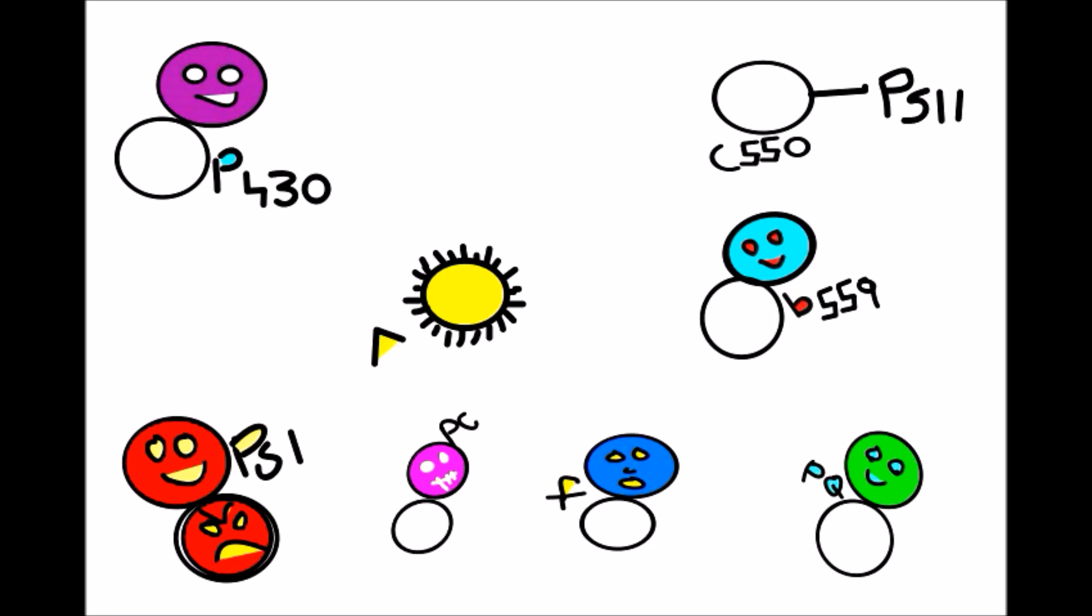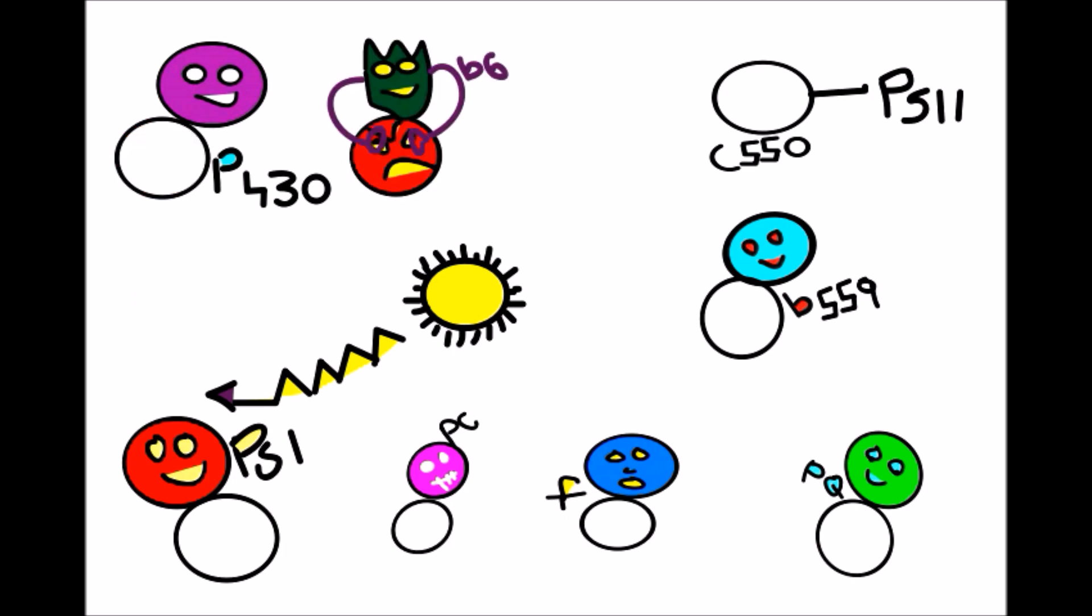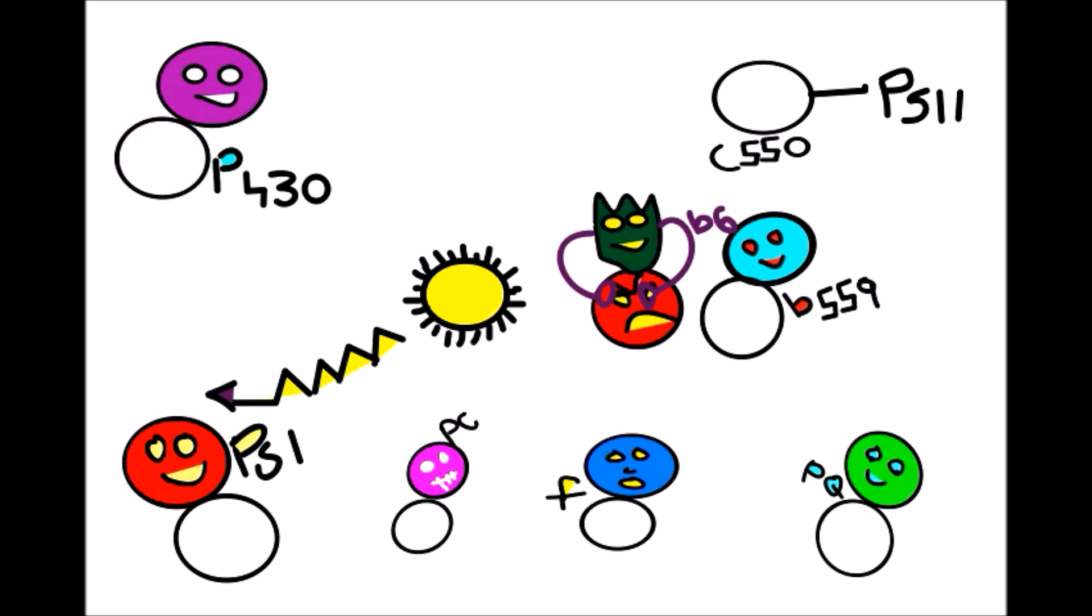Now coming to the cyclic process. It is a rather simple process where when sunlight illuminates PS1, it enters into P430 and with cytochrome B6 it captures electron and takes it to PS2 directly.